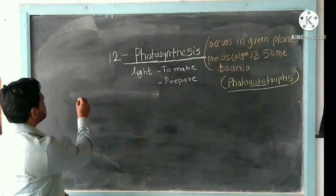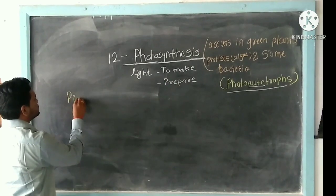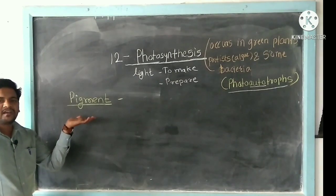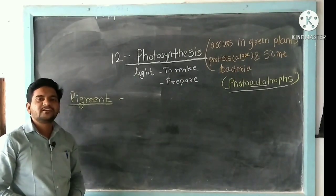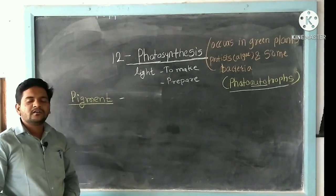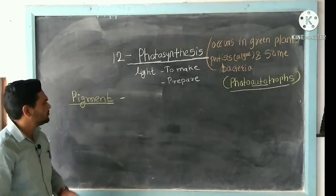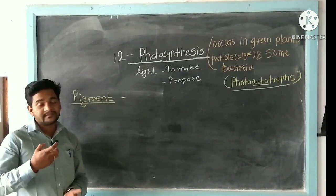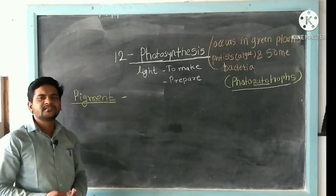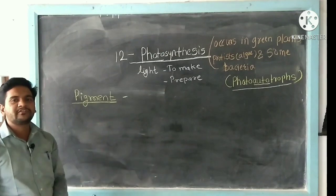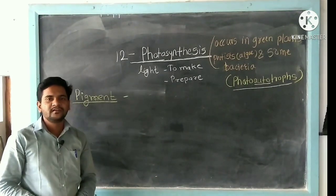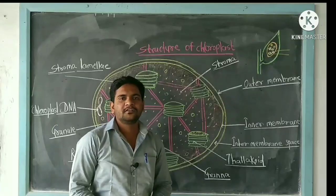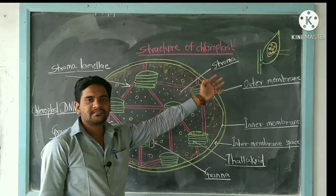Next, pigments. Pigments absorb certain wavelengths of light and reflect other wavelengths. Examples of pigments include chlorophyll and carotenoids. Next we will look at the structure of chlorophyll.